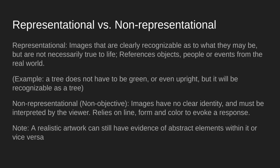There are two types of abstract art: representational and non-representational. Representational art shows images that are recognizable as what they're meant to be, but they don't have to be realistic. It might reference an object, person, or event from the real world but has been highly stylized — like the example of a cow made up of triangles. Non-representational abstract art shows images that have no clear identity and need to be interpreted by the viewer, relying on line, form, and color — all elements of art — to get a response from the viewer.